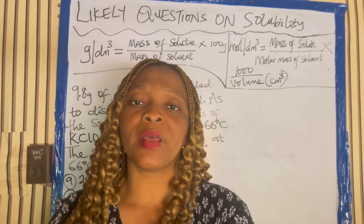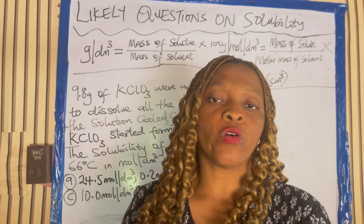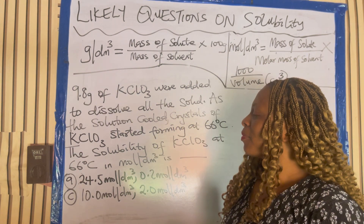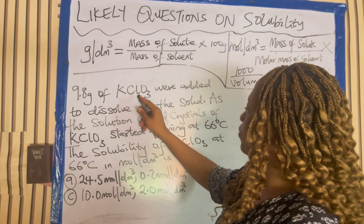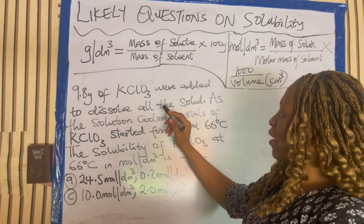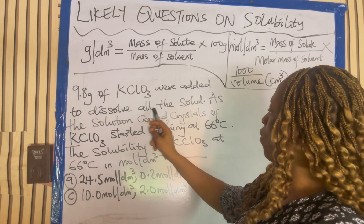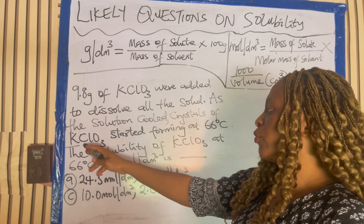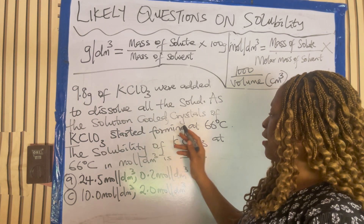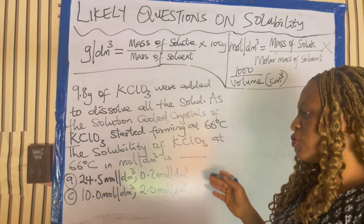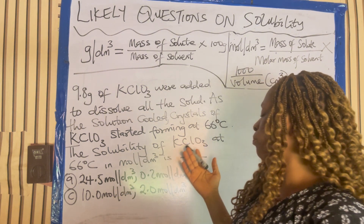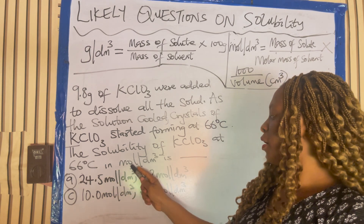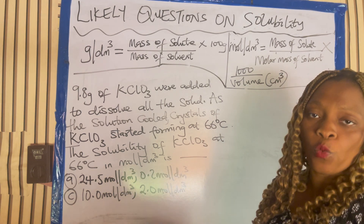Having known this, you have to check out the parameters that you were given before you commence to solve. Now let's look at the first question. 9.8 gram of potassium chlorate was added to dissolve all the solid. As the solution cooled, crystals of potassium chlorate started forming at 66 degrees Celsius. The solubility of potassium chlorate at 66 degrees Celsius in mole per dm cube is what?